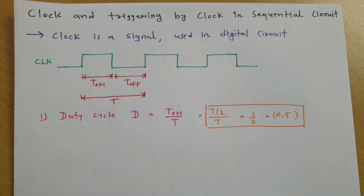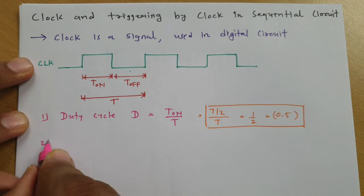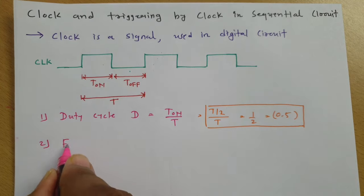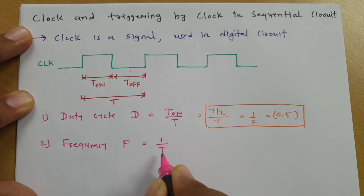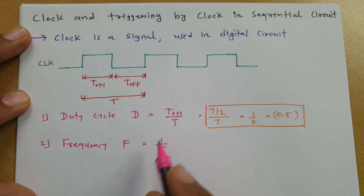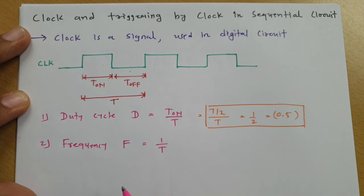The second important parameter is frequency. Frequency is 1 divided by time period T. Duty cycle and frequency together define the operational speed and transition of state in a sequential circuit.